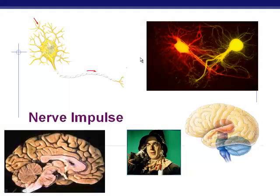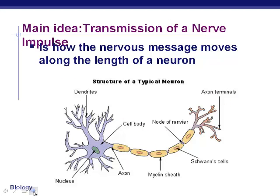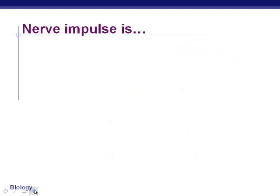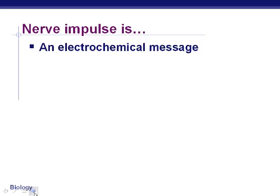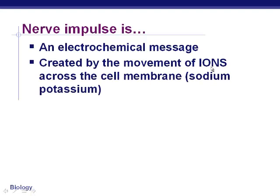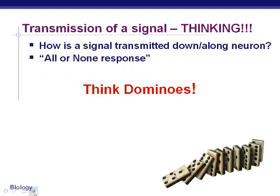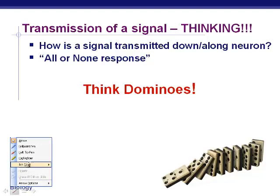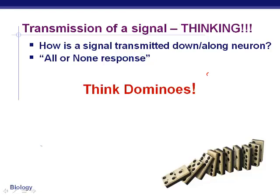Welcome back. We're looking at the nervous system again. Last time we looked at what a neuron was, and now we're going to talk about how a message is sent. The main idea is the transmission of a nerve impulse along the entire length of a neuron. It's an electrochemical message that uses the movement of ions — specifically sodium and potassium — to generate this message. Think of it like dominoes.